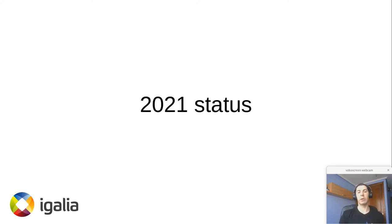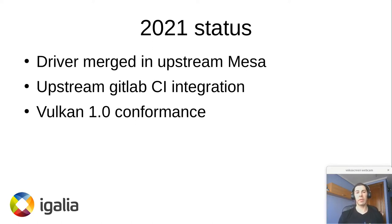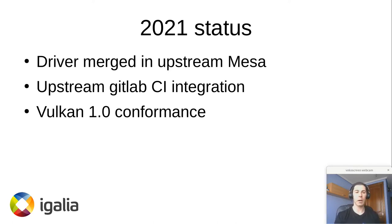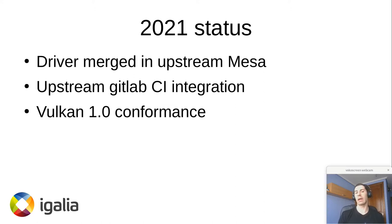Fast forward one year to the present day. Some things that are probably well known by now: we merged the driver upstream and have been developing upstream ever since. We also integrated our internal CI with the upstream Mesa GitLab CI. This has been very nice for both the OpenGL and the Vulkan drivers — it makes regression checking a lot easier and makes it easier for external contributors to test their patches before sending them for review. We also obtained Vulkan conformance, which happened either before the end of last year or very early after.